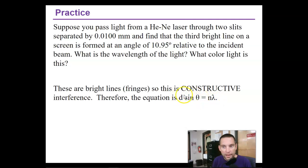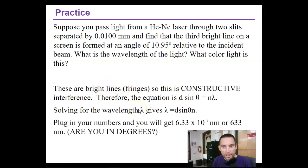Remember, this d sine theta is your path difference. By solving this equation for wavelength, we get lambda equals d sine theta divided by n. Then plug in your numbers and you're going to get 6.33 times 10 to the negative 7 meters or 633 nanometers.